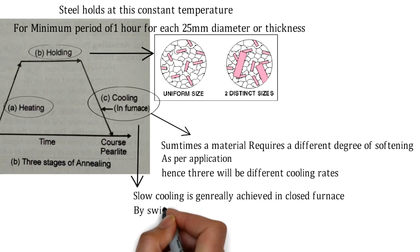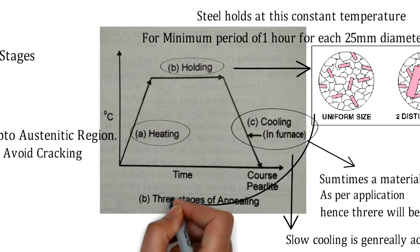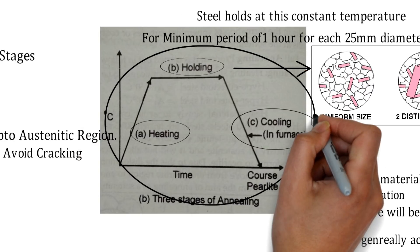It is generally achieved in a closed furnace by switching off the electric supply of the furnace in which we have started heating. This whole process is nothing but the full annealing process.